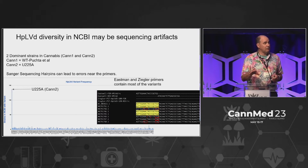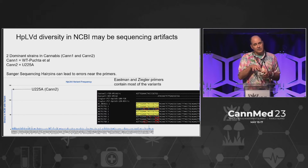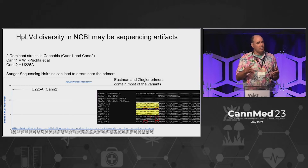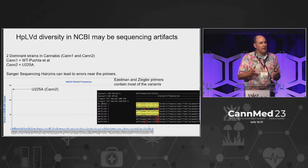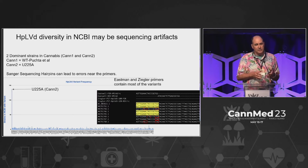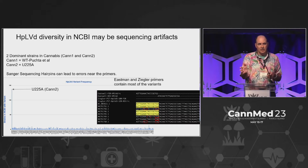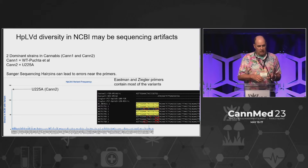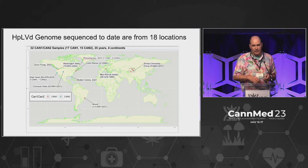Many of these variants are actually condensing or consolidating themselves under primers that have been published in the literature for surveying this. There's probably something going on with Sanger sequencing where we get poor sequencing over the primer sites and a higher error rate there.